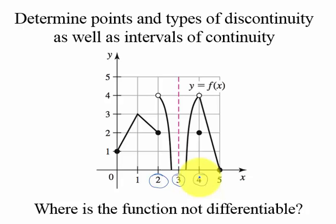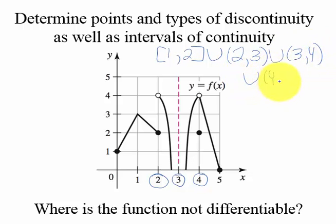If we were writing intervals of continuity, this is going to be continuous from 1 to 2, and I'll put the union sign since that's what our homework likes, and it's also going to be continuous from 2 to 3, rounded because not equaling those ends there, and then it's also continuous from 3 to 4, rounded, and then from 4 to 5. So there are intervals of continuity.